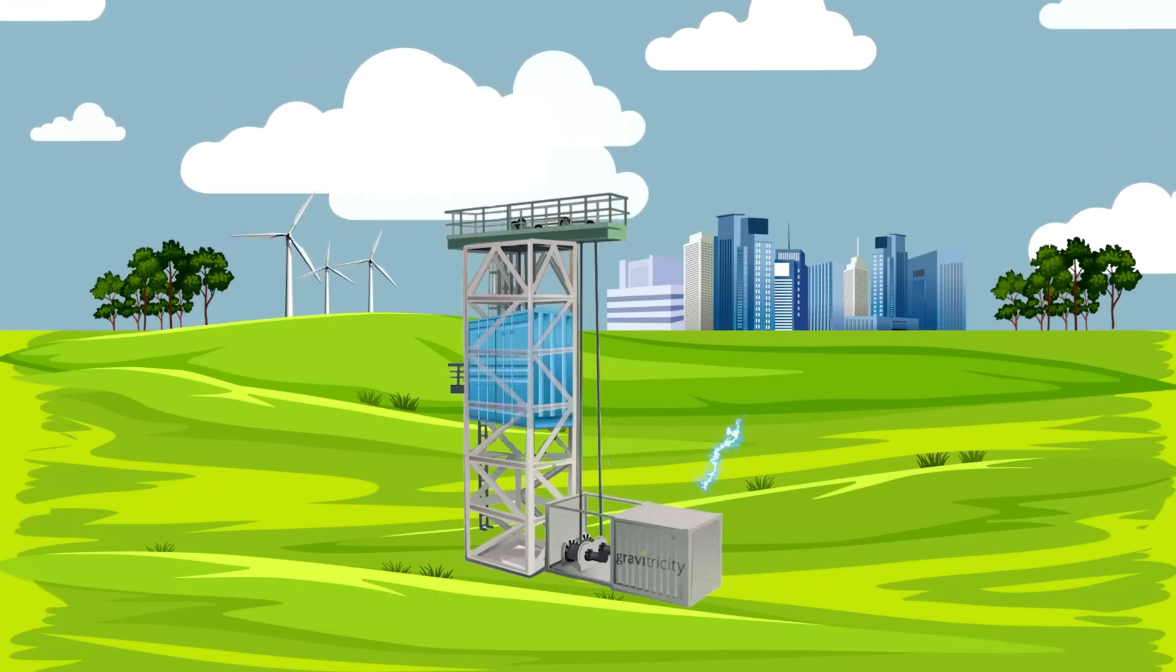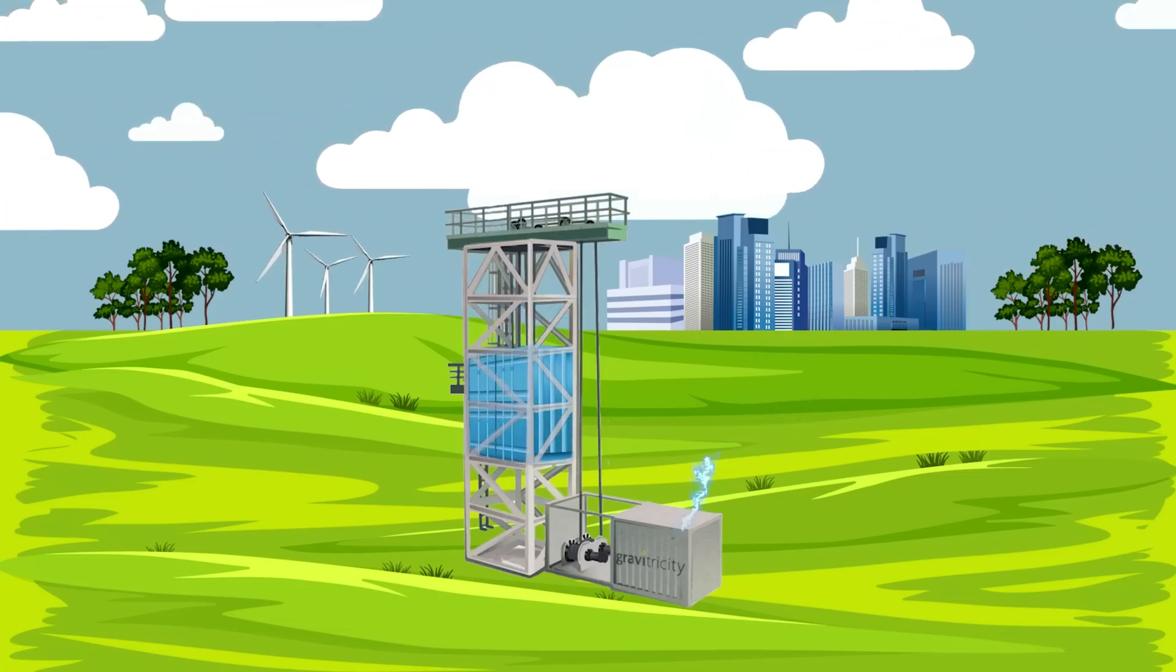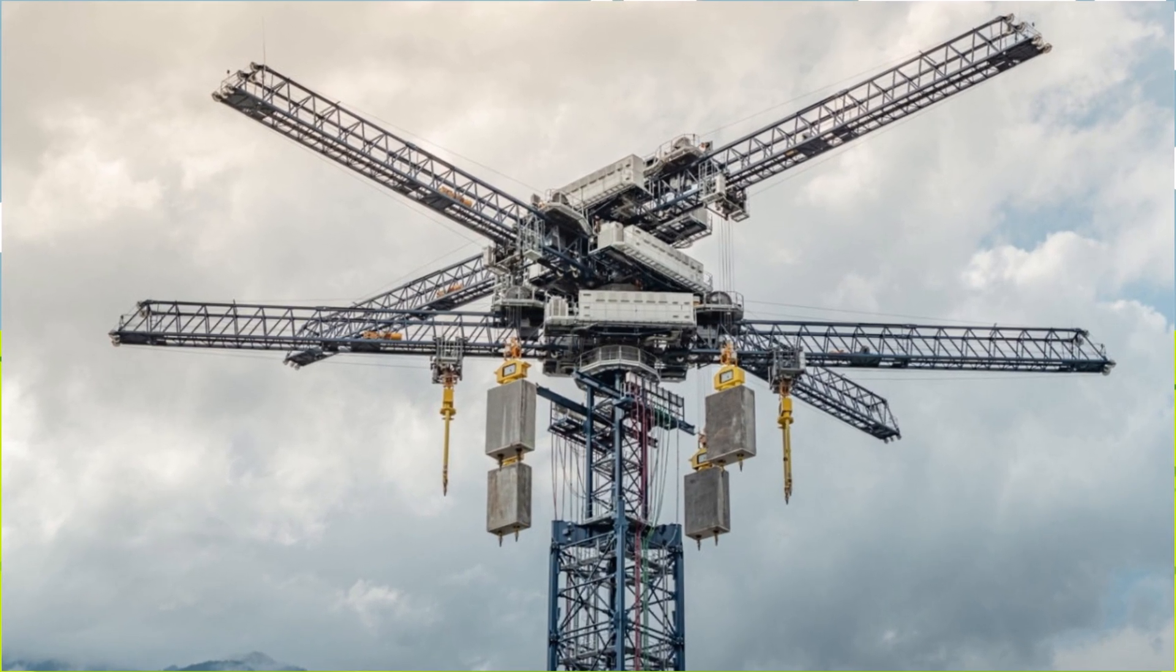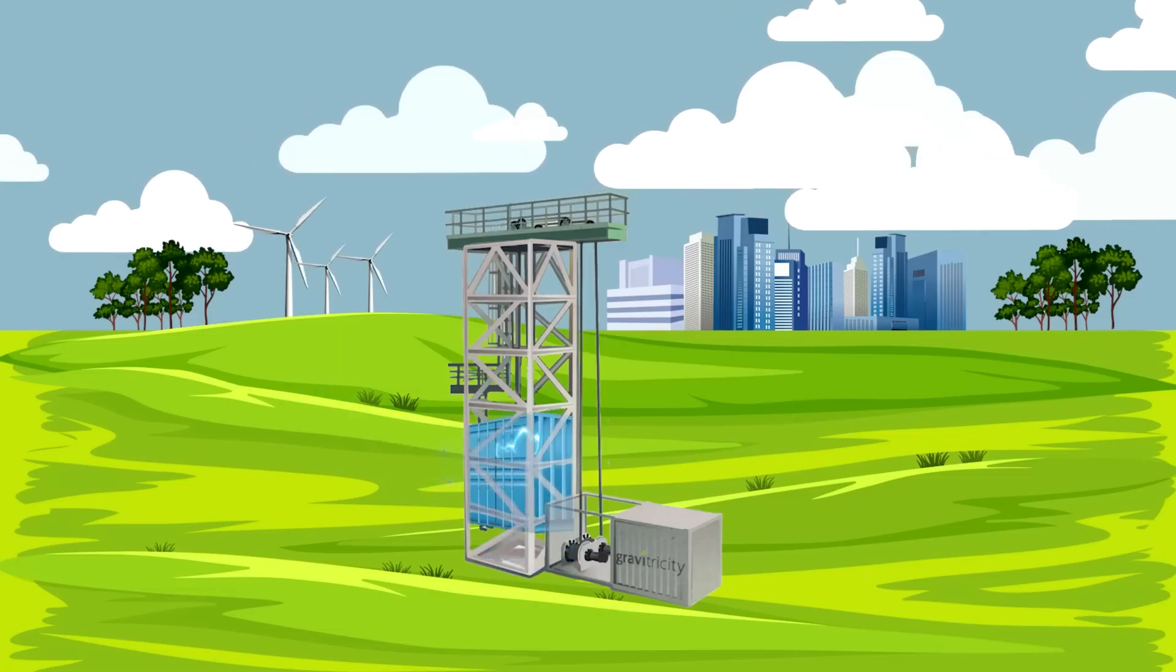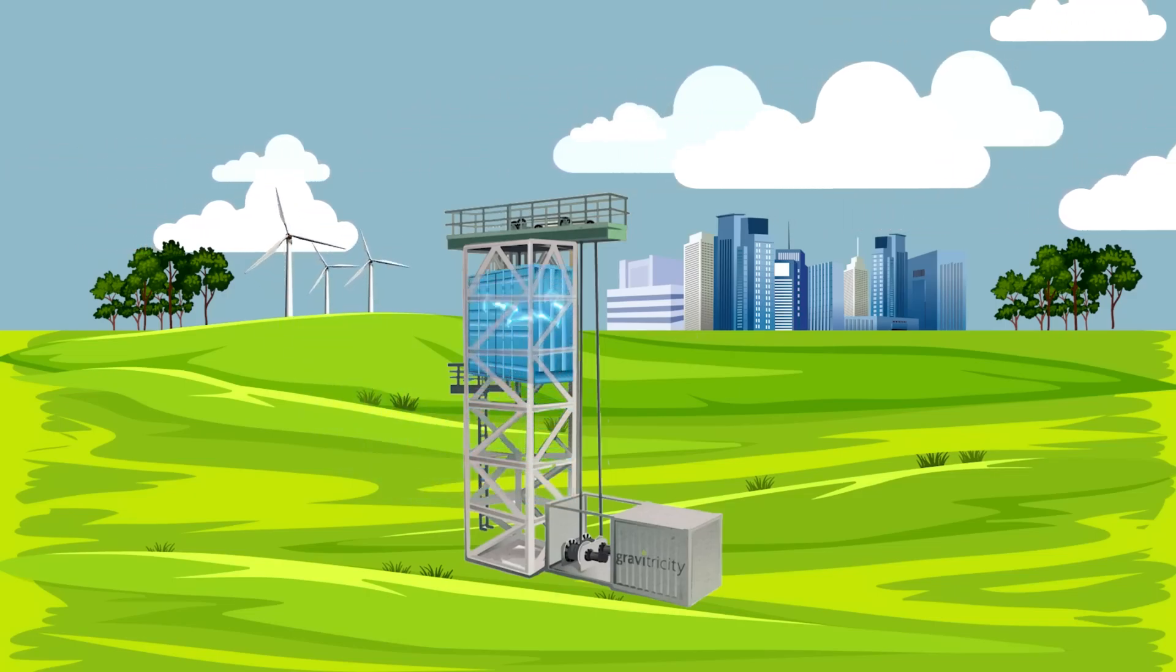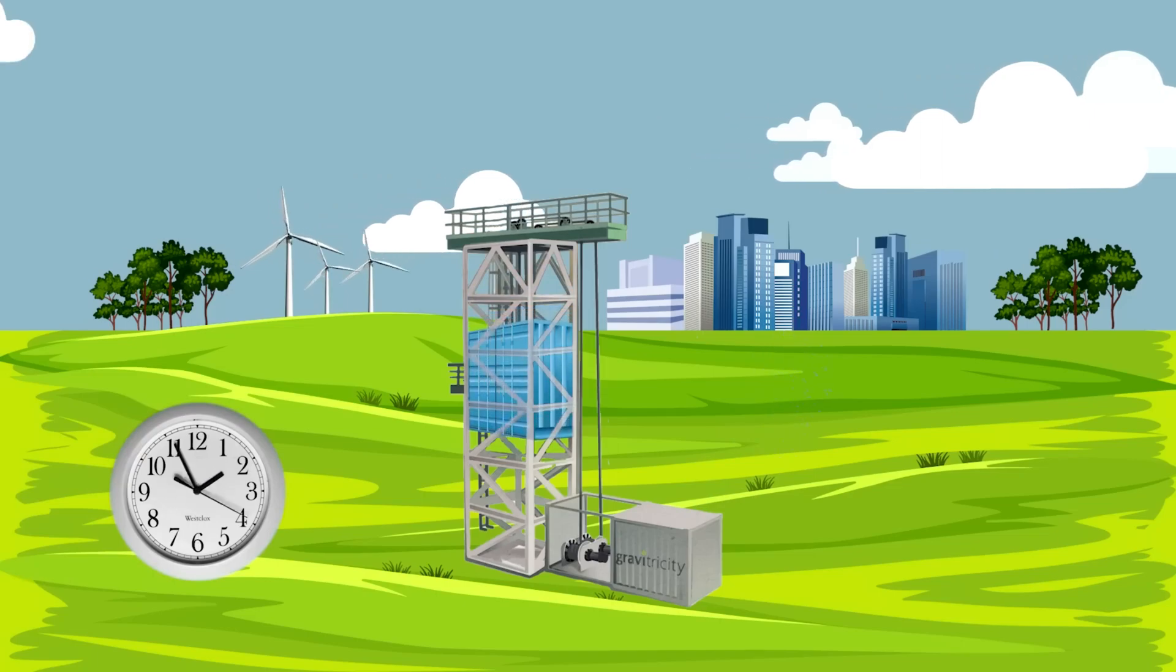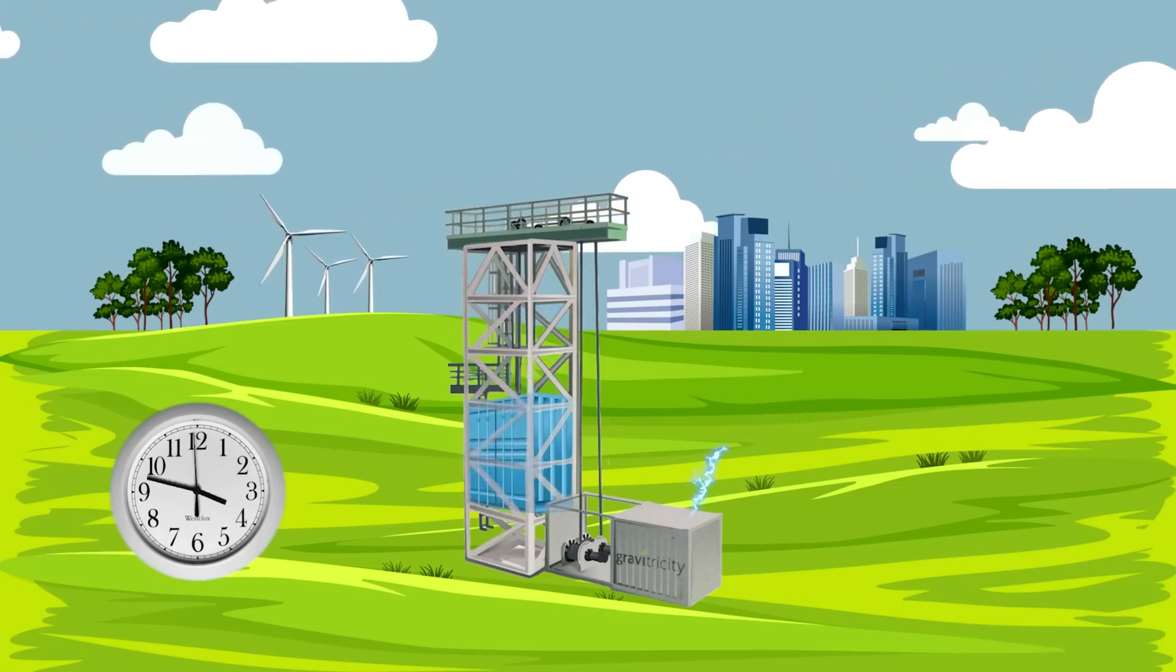A gravity battery system works by using excess energy from the grid to lift a heavy object, such as a large mass of concrete or a weight, on a pulley, using energy from a power source. When energy is needed, the object can fall and the potential energy is converted back into electricity.